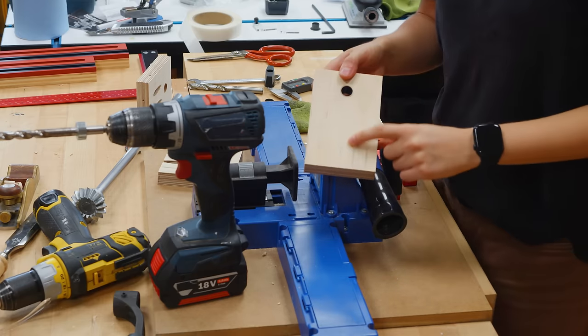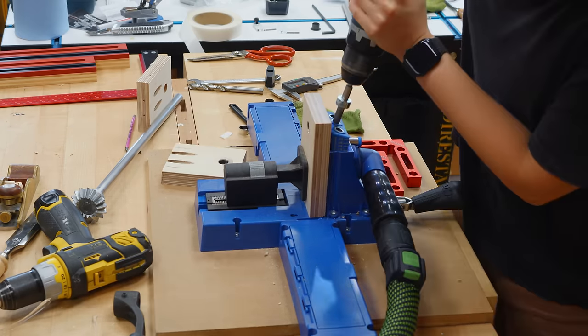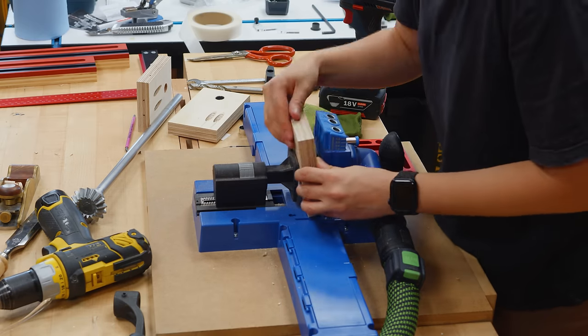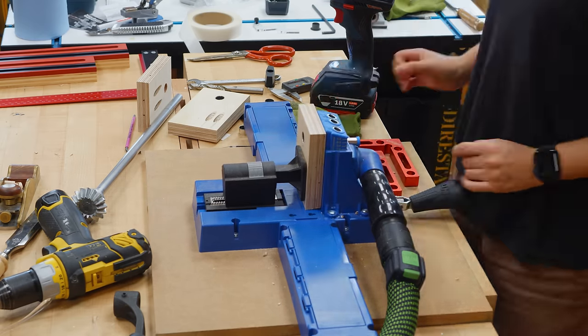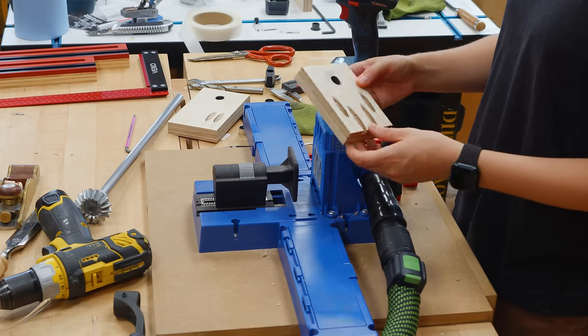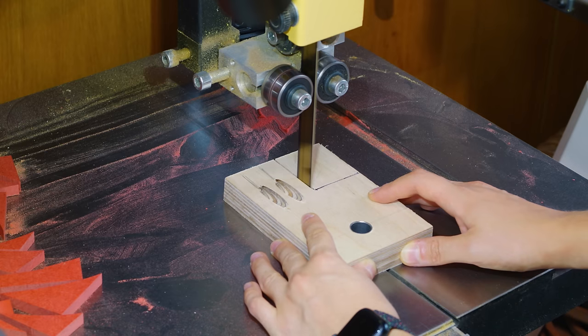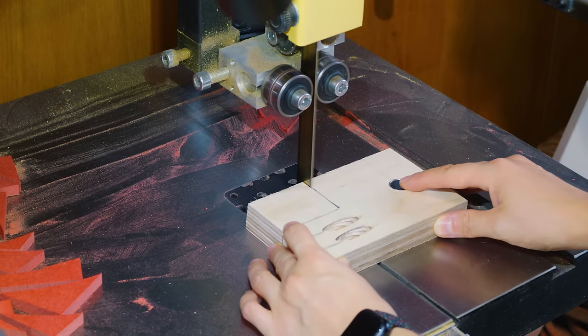I can now drill pocket holes at convenient places. Again, just ignore these two old ones. The front support piece needs to be cut to fit around the cast iron table.